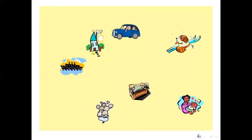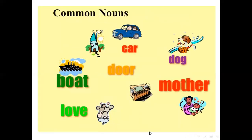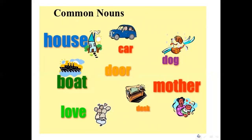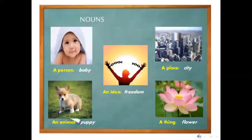Here you see pictures of common nouns: car, boat, love, mother, dog, door, house, desk. All these pictures show common nouns. Again, here you see examples by category — a person: baby; place: city; idea: freedom; animal: puppy; thing: flower. These are all common nouns.